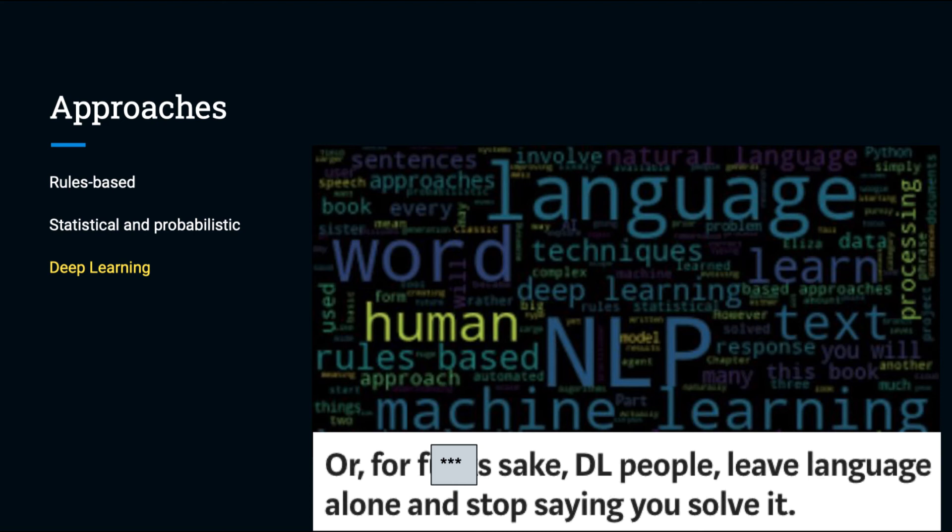However, not everyone has access to petabytes of data and the hardware to process it, so smaller scale deep learning is still used in many NLP applications. In fact, many end-to-end NLP projects will involve techniques from rules-based approaches, statistical and probabilistic approaches, and deep learning. So all three approaches need to be understood.